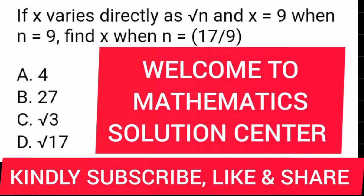If x varies directly as square root of n and x is equal to 9 when n is equal to 9, find x when n is equal to 17 over 9.